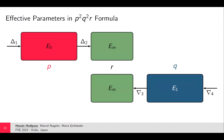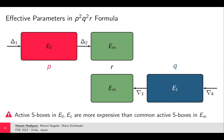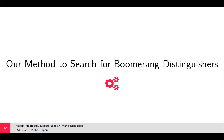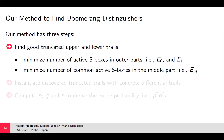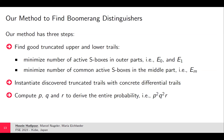If we can create a constraint programming model that counts active S-boxes in E0 and E1 and common active S-boxes in Em, we get a rough probability estimate. Note that the cost of active S-boxes in E0 and E1 is higher than common active S-boxes in Em because p and q have exponent 2 while r has exponent 1 in the formula p²q²r. Our new method has three main steps: finding good truncated trails minimizing active S-boxes in E0, E1, and common active S-boxes in Em; instantiating those truncated trails with concrete differential trails; then computing p, q, and r separately to get the overall sandwich probability.